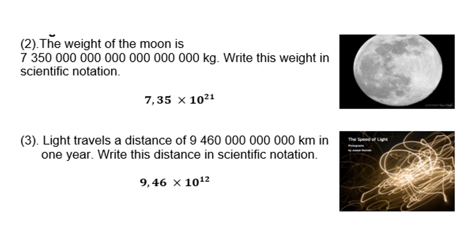The weight of the moon is a very large number — I'm sure you'll all struggle to read it out. So what I'm going to do is convert it into scientific notation. Remember, you only need one number in front of the decimal comma, so therefore 7.35. And then you count how many times the comma must move — it's exactly 21 times. So therefore 7.35 times 10 to the power of 21.